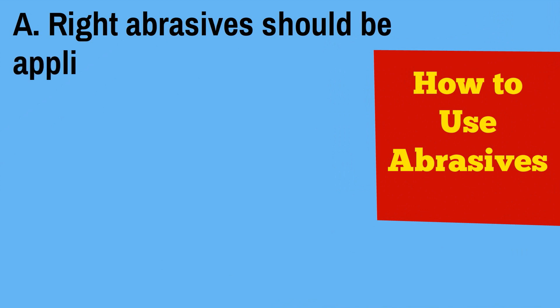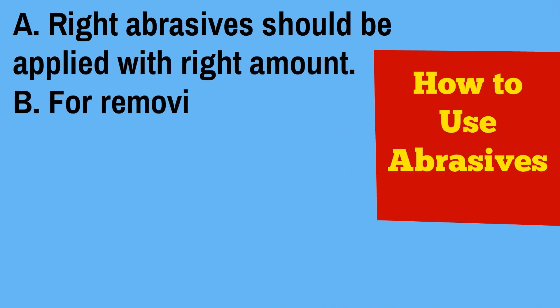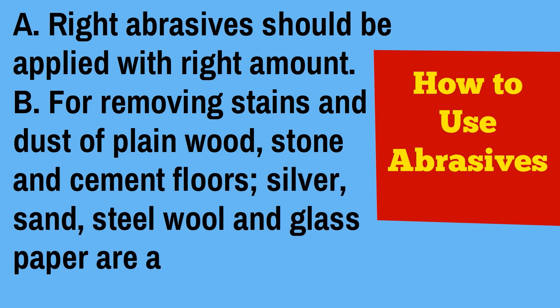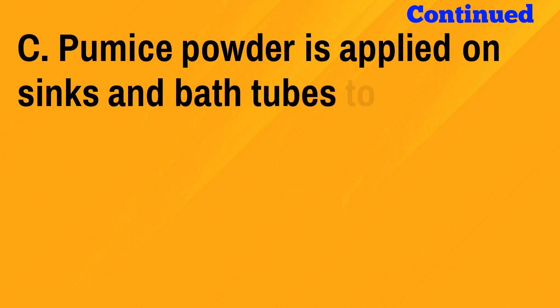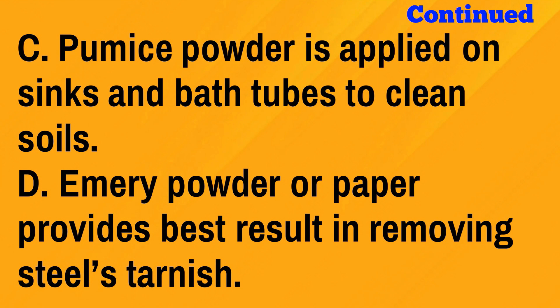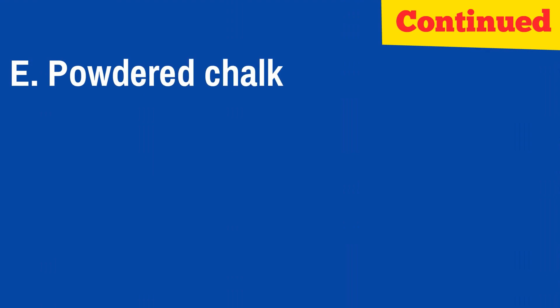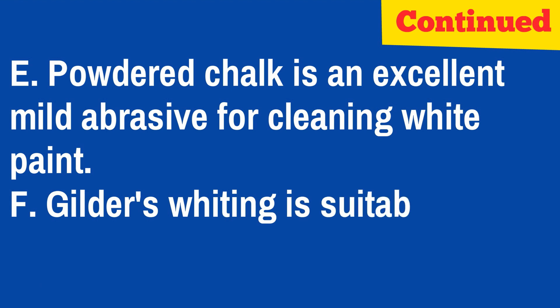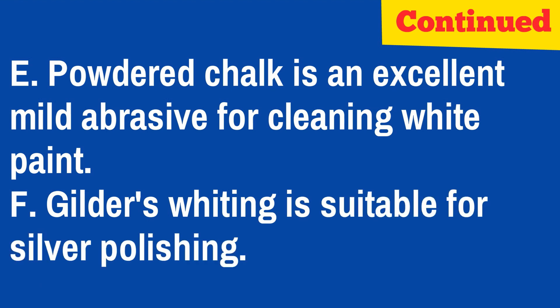How to use abrasives: The right abrasive should be applied in the right amount. For removing stains and dust from plain wood, stone, and cement floors, silver sand, steel wool, and glass paper are applied. Pumice powder is applied on sinks and bathtubs to clean soils. Emery powder or paper provides the best result in removing steel tarnish. Powdered chalk is an excellent mild abrasive for cleaning white paint. Gilder's whiting is suitable for silver polishing.